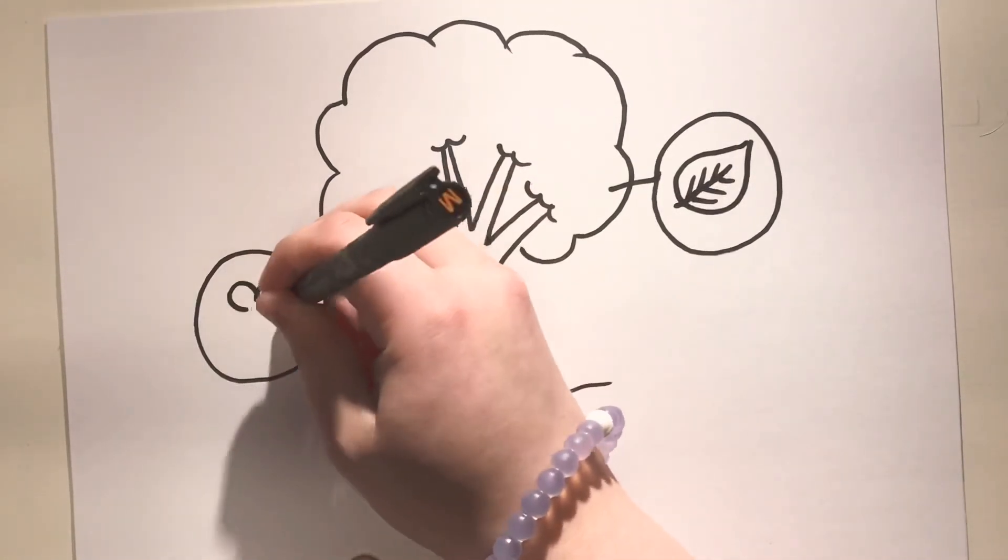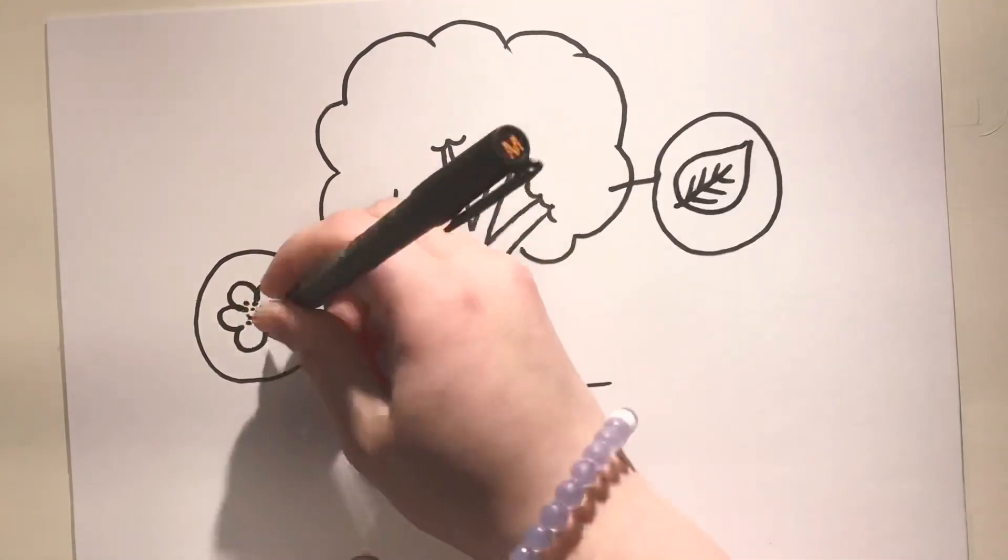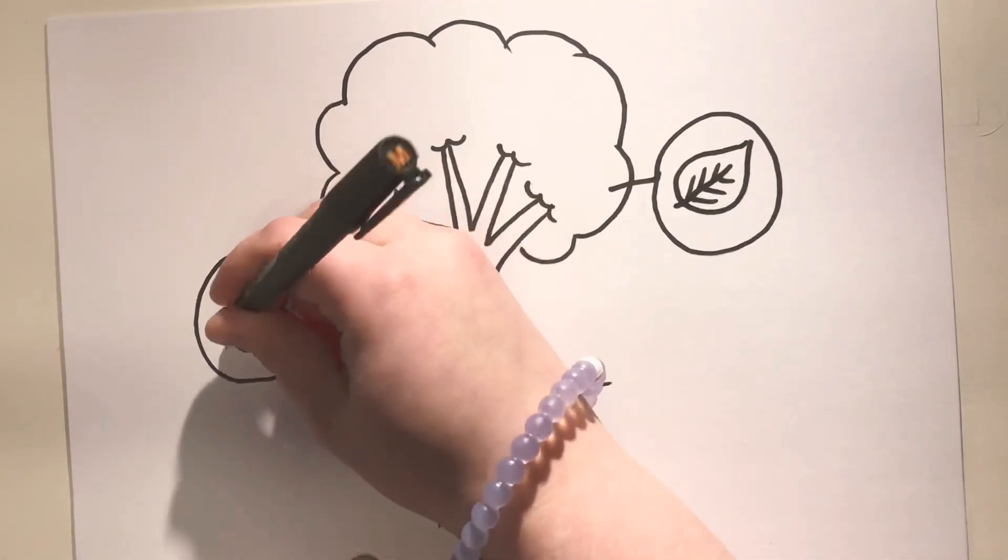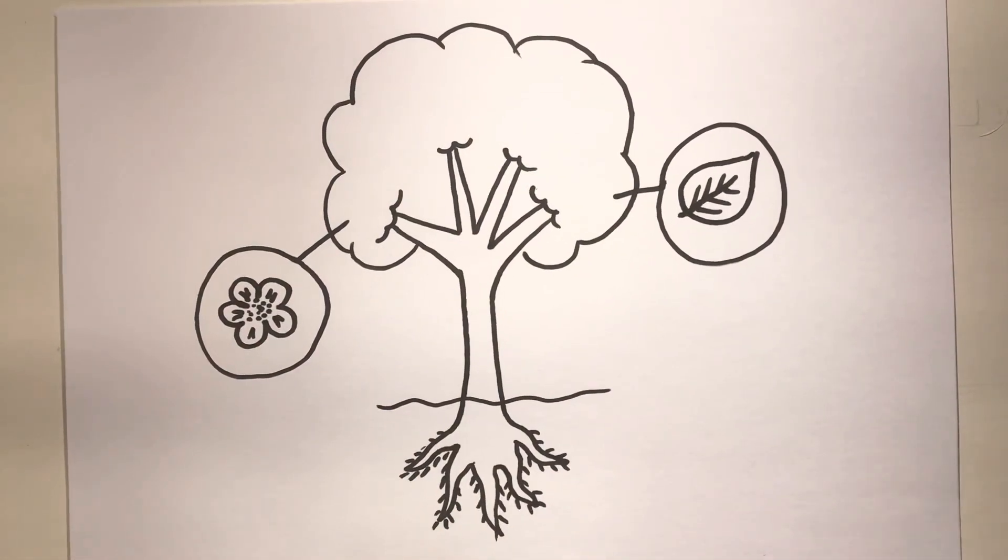Some trees can also have flowers, and flowers also have a very important task because they have pollen. And when pollen gets to the ground, it makes a new tree. So the job of the flower is to make baby trees.